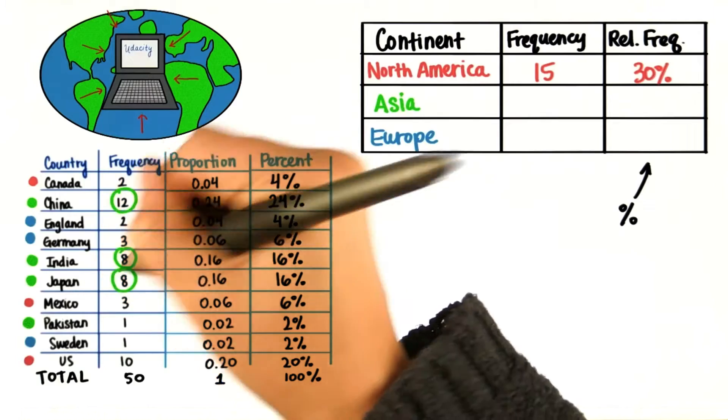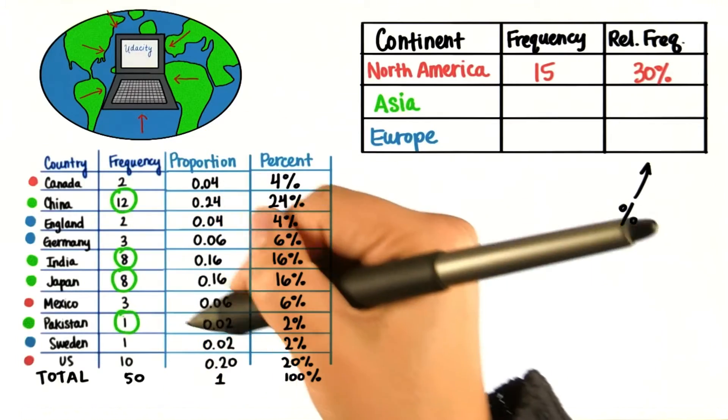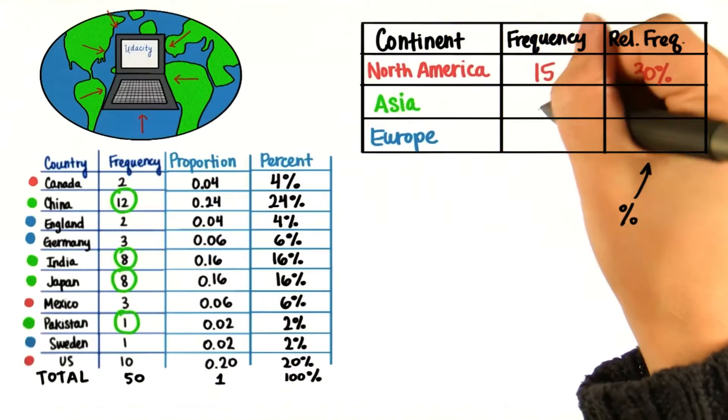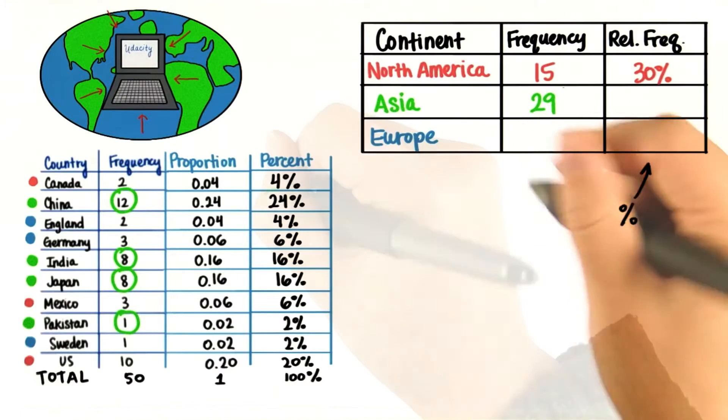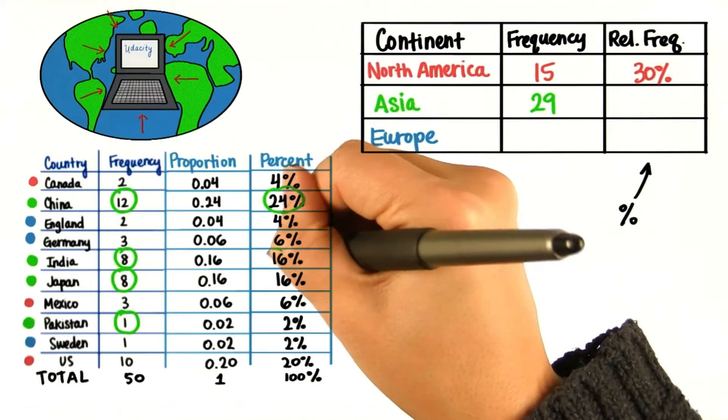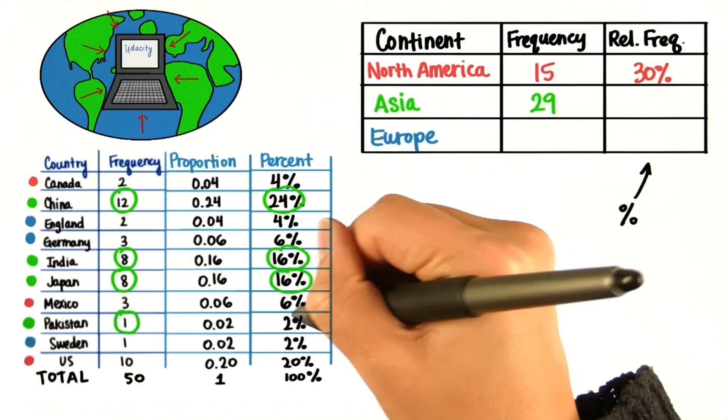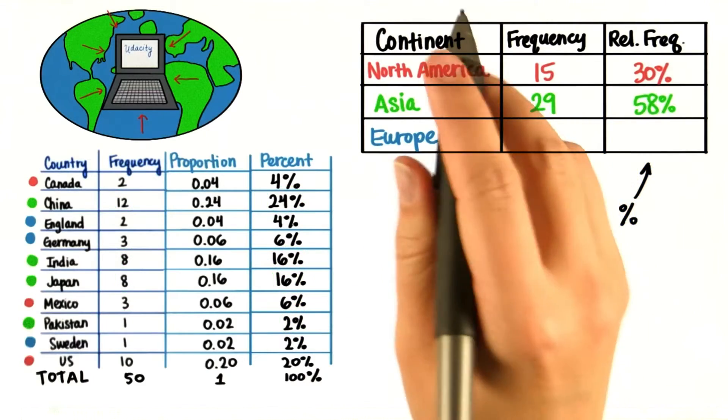8 from India, 8 from Japan, and 1 from Pakistan. So if we add them, we get 29 students from Asia. 24 plus 16 plus 16 plus 2 is 58%.